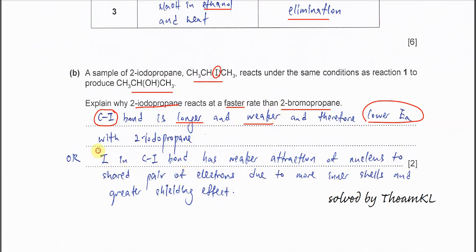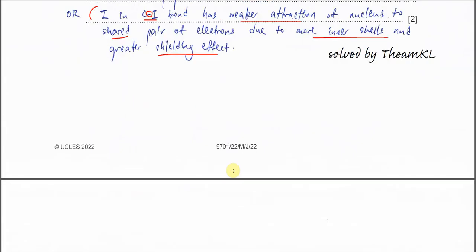Or you can explain in this way, which is similar. Iodine in the C-I bond has weaker attraction of nucleus to shared electrons. The bond strength is because of the attractions between the nucleus to the shared electrons here. If the attraction of the nucleus to the shared electrons is weaker, then the bond strength is weaker. Because iodine has more inner shells and greater shielding, the attraction of the nucleus to the shared electrons here is weaker. That's why it's easier to break.